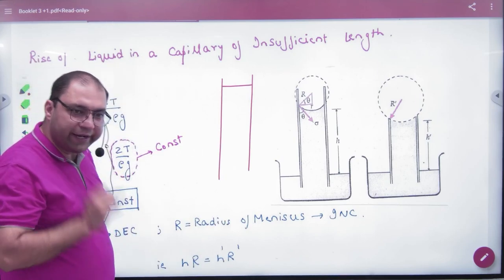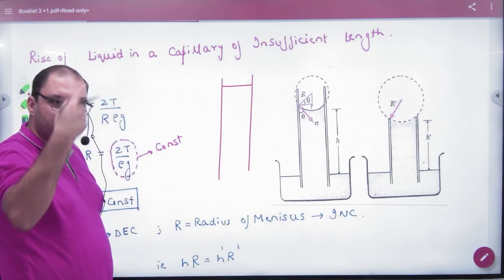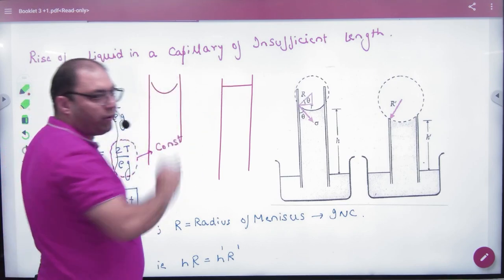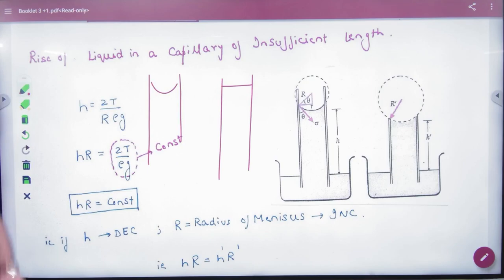If you have a small height of the tube, the radius of the meniscus has increased. If it was like this, then it will be like this. The radius has increased. It will be flat. OK.